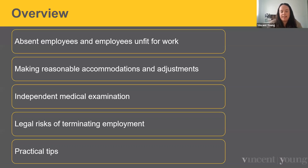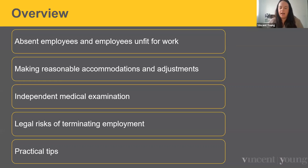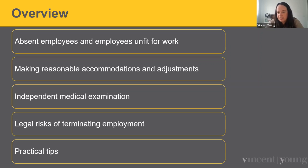In terms of what we're going to talk about today, we're going to be focusing on absent employees and unfitness for work and how we navigate those concepts. Making reasonable accommodations and adjustments — particularly if there's an injury or a disability, there's a requirement on organisations to consider those. Independent medical examinations, which always gets a lot of questions. And obviously some risks in terms of terminating employment and how we best minimise those risks. Then we'll finish up with some practical tips.